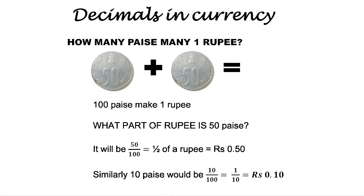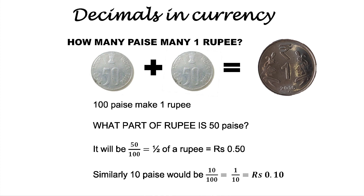Students, let us now use decimals in currency. How many paise make 1 rupee? Here on the screen, I have a 50 paise coin. When we add 2 fifty paise coins, we get 1 rupee. That means 50 paise plus 50 paise is equal to 100 paise, which make 1 rupee. So what part of a rupee would be 50 paise? It's 50 upon 100 which is equal to half of a rupee, which is equal to rupees 0.50. Similarly, 10 paise would be 10 upon 100, which is equal to 1 upon 10, which is equal to rupees 0.10.